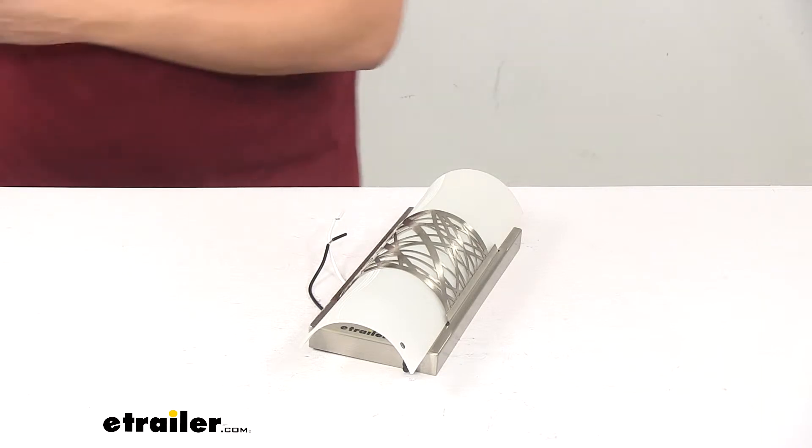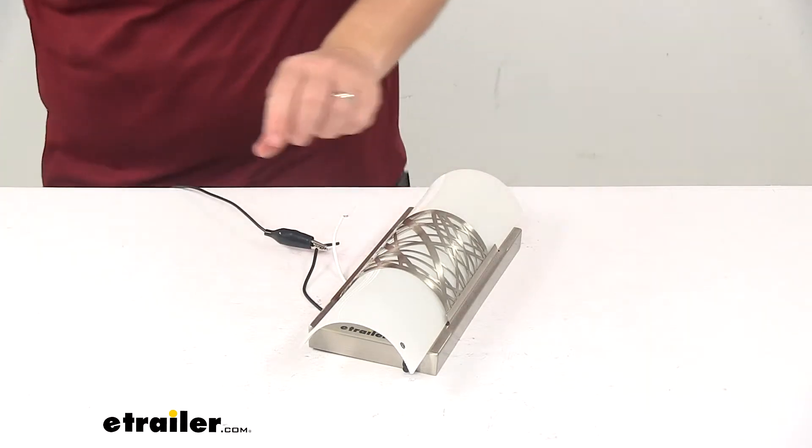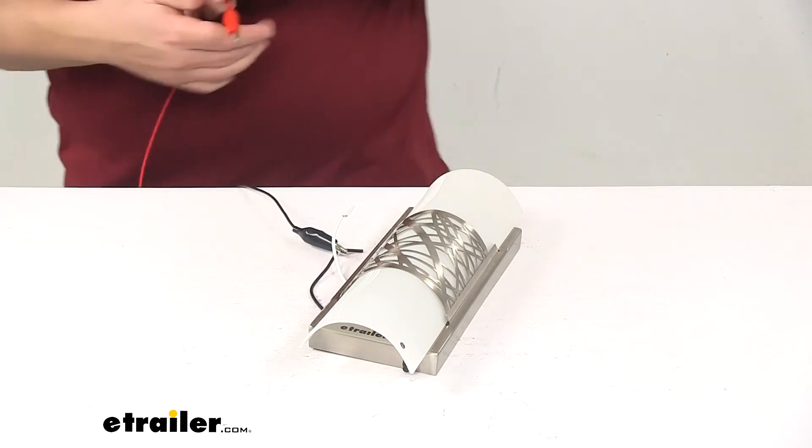So again, the black wire is the power wire, and the white wire is our ground wire.